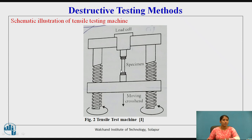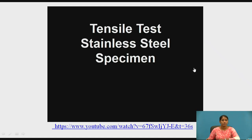This is the schematic illustration of the tensile testing machine. The simple diagram shows the specimen mounted between the two jaws, upper and lower. This is the moving cross head and this is the load cell.